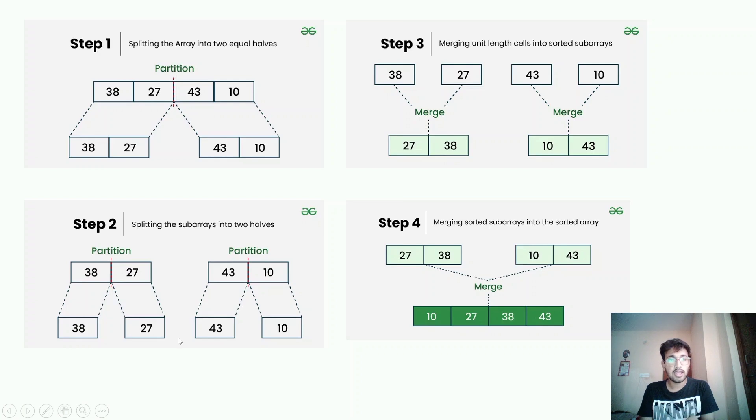As it goes on, when we merge the two sub-arrays then we would be also sorting the arrays. As you can see in step 3, merging unit length cells into sorted sub-arrays and in the final step when we use the merge, we are going to merge the two sub-arrays into one final array which would be sorted.